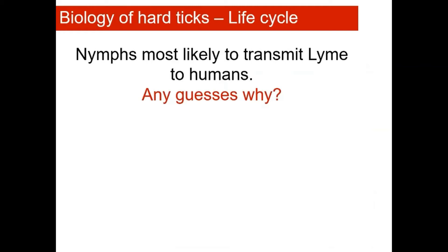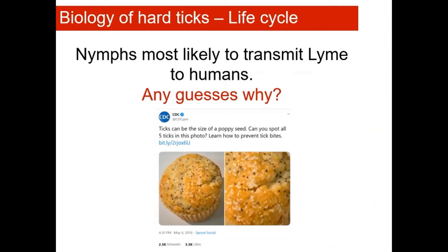The nymphal stage of the tick is actually the stage most likely to transmit the bacteria that causes Lyme disease to humans. There are a couple of reasons for this. One is because of how small these ticks are — it's very easy for people to miss them on their bodies, so people are more likely to get bitten and for the tick to stay on them long enough to transmit the bacteria. Another reason is that nymphal ticks tend to be most active when humans are most active. Nymphs are out and looking for a host between April and throughout much of the summer, which is coincidentally when people are also out and most likely to contact ticks.